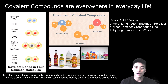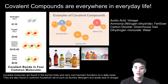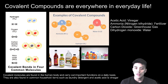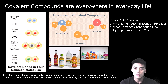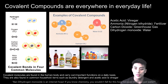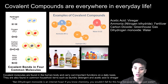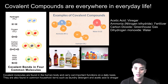Covalent compounds are found everywhere in everyday life. They are found in the human body where they carry out important chemical reactions. They're also found in common household items such as ammonia, vinegar, and laundry detergent. Acetic acid is a covalent molecule that makes up vinegar. Ammonia, or nitrogen trihydride, is used as fertilizer to grow crops on farms. Carbon dioxide has been the center of many discussions — it is a greenhouse gas responsible for global warming. And finally, do not ban dihydrogen monoxide, because as you now know from your covalent naming rules, dihydrogen monoxide is just water. Thanks for tuning in, and I'll see you next time on Wind Chemistry.